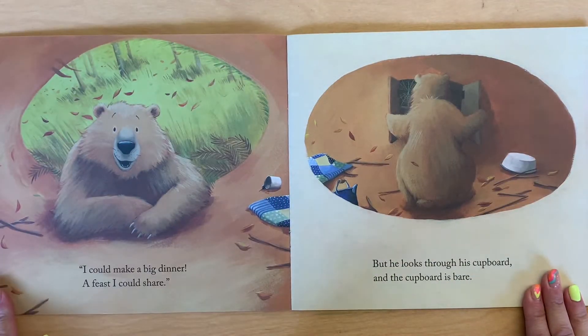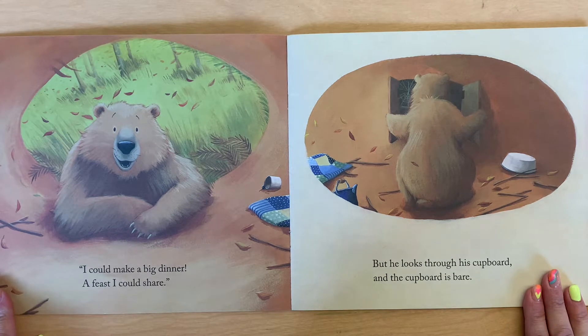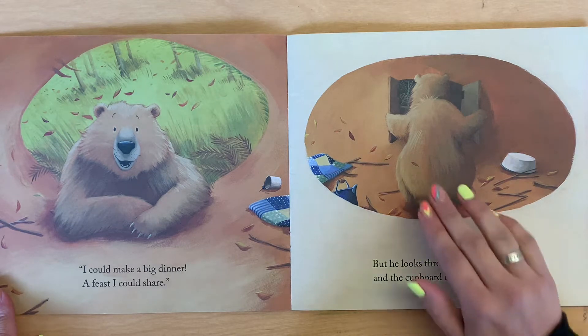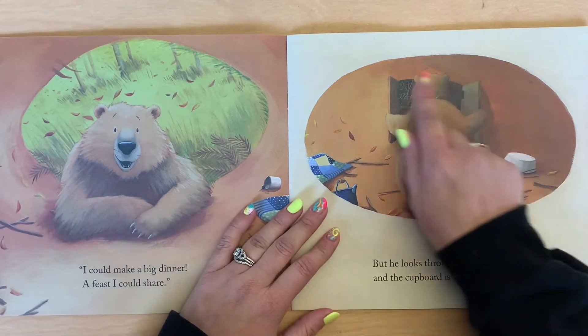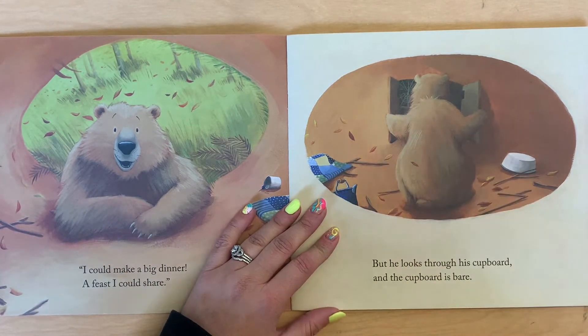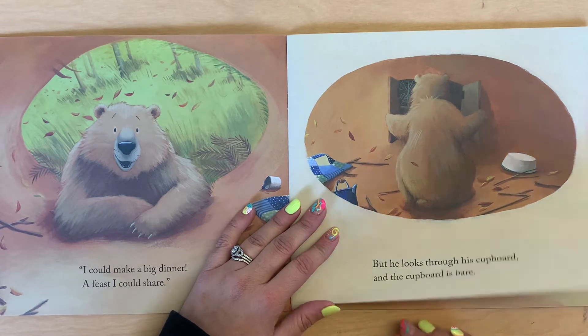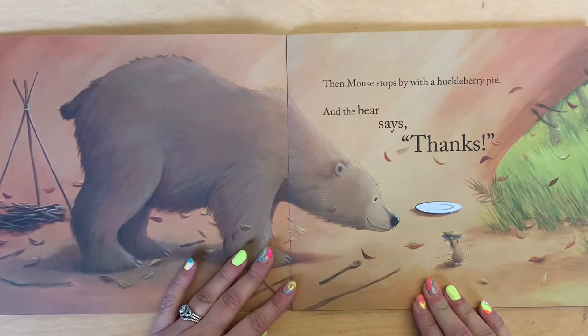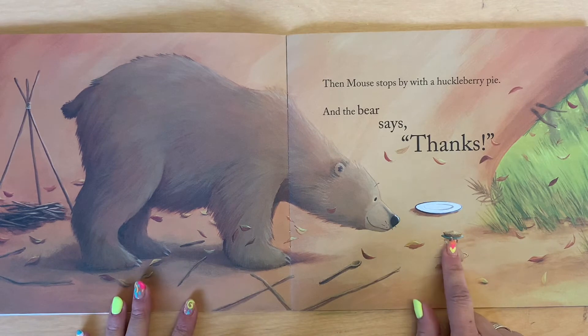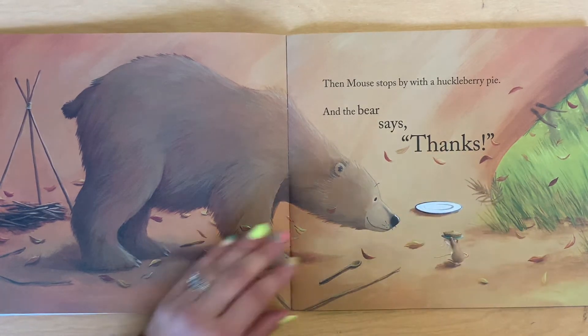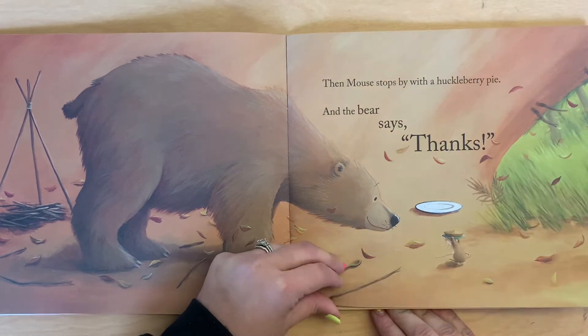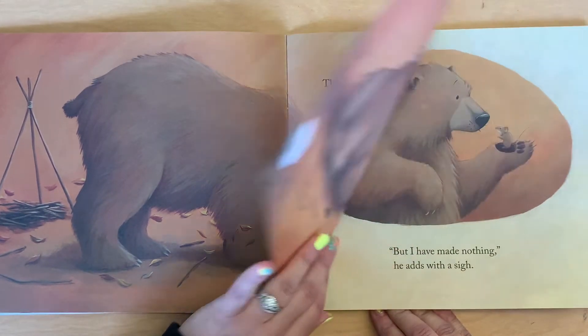I could make a big dinner, a feast I could share, but he looks through the cupboards and his cupboard is bear. Now he's a bear, but to have a bear cupboard means to have it be empty. There's nothing in it. Then Mouse stops by with a huckleberry pie, and the bear says thanks. Maybe his friends are going to bring the food and the feast.